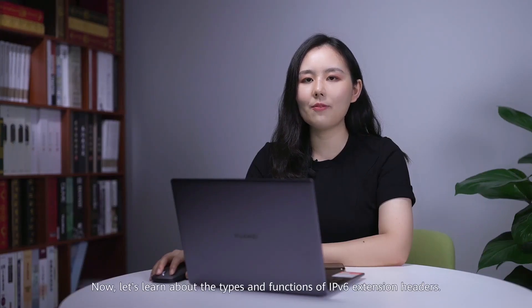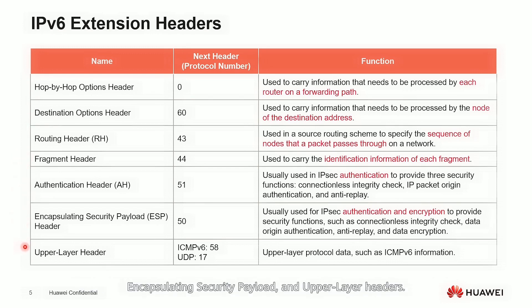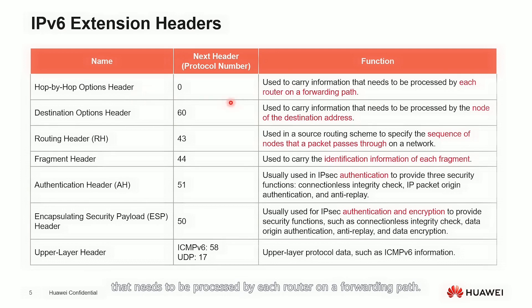Now let's learn about the types and functions of IPv6 extension headers. As defined in RFC 8200, IPv6 has the following extension headers: hop-by-hop options, destination options, routing, fragment, authentication, encapsulating security payload, and upper-layer headers. The hop-by-hop options header is used to carry information that needs to be processed by each router on a forwarding path; its next header value is 0.